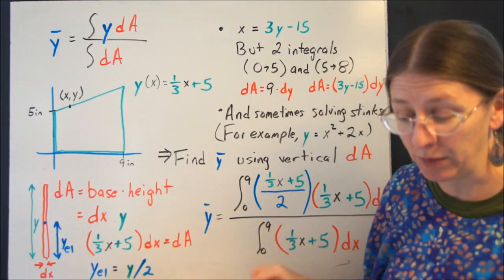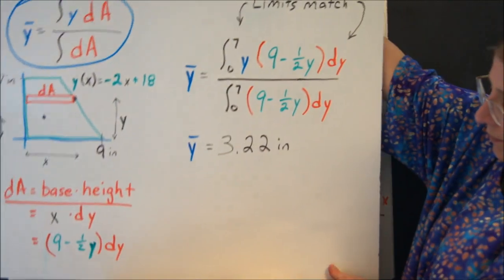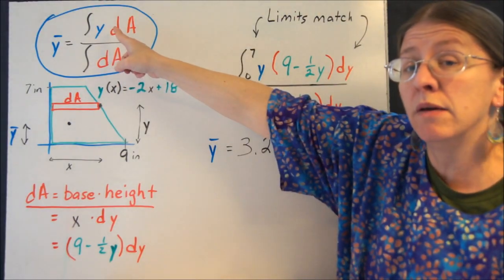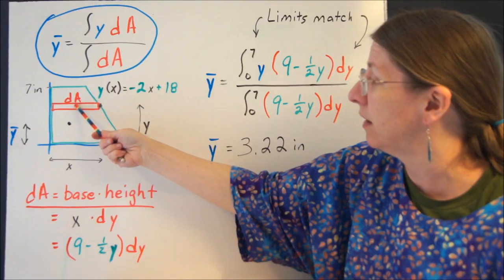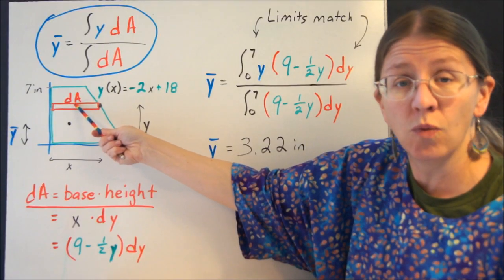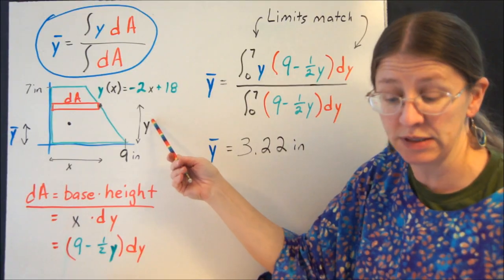Now, why didn't I not have to do it before? If you look at what happens on this one, this blue y that I had right here is the coordinate for the centroid of this differential area. Well, the y coordinate for that box is the same thing as this y. So it didn't make any difference.